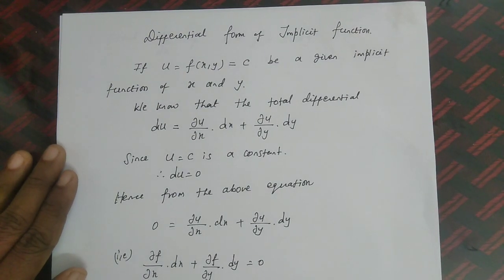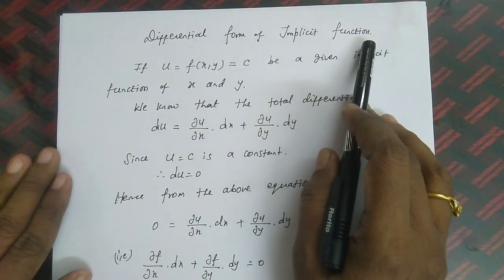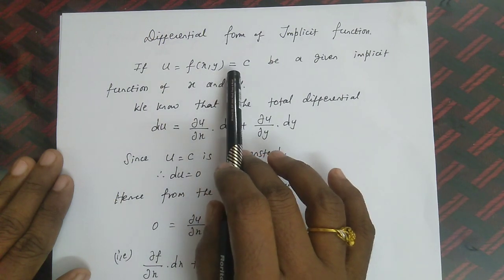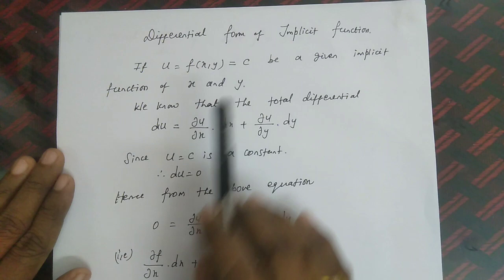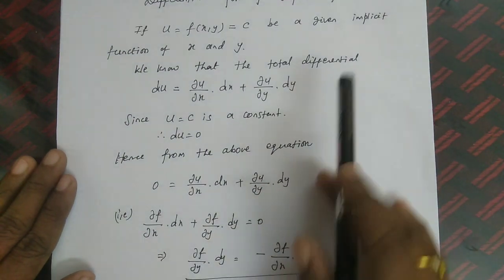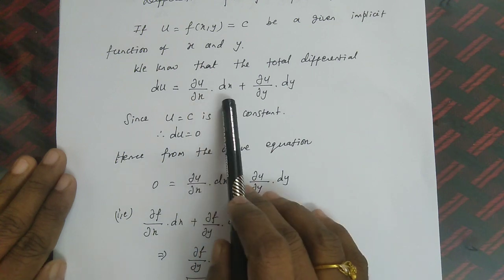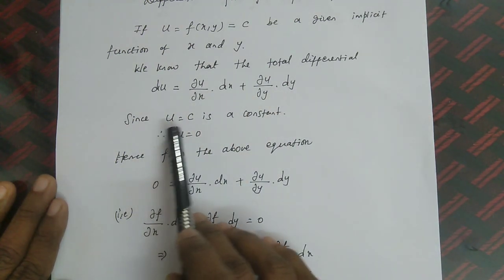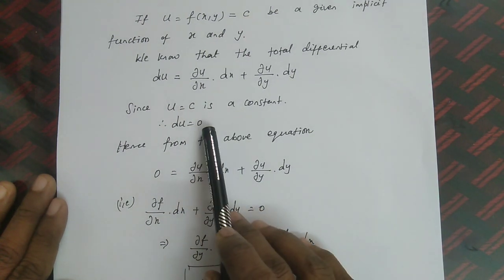Welcome to the lecture series on functions of several variables. Today we are going to discuss the differential form of implicit functions. If u = f(x, y) = c is a given implicit function of x and y, we know that the total differential du = (∂u/∂x)dx + (∂u/∂y)dy. Since u = c is a constant, du = 0.